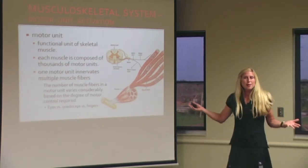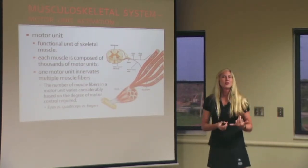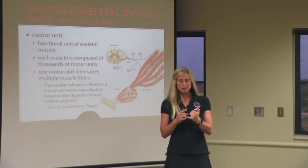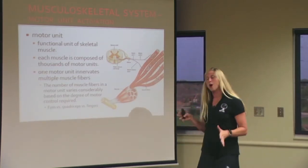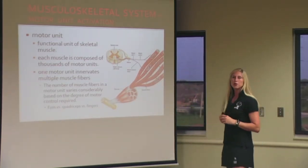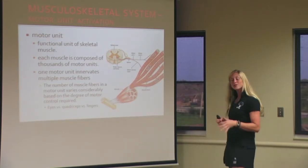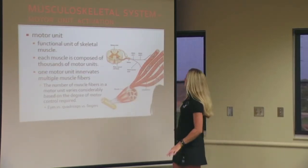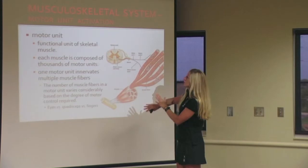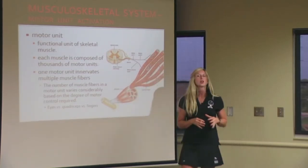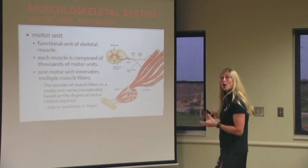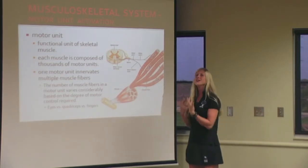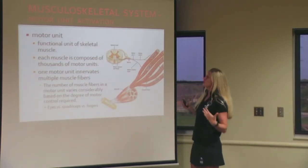Now, how does that muscle actually contract? We talked about the nervous system and how our body is innervated through a maze of nerves that spin off of our brain and spinal cord. Those nerves get signals from the brain, send them out, and off of the nerves are bundles called motor units. The motor unit is the functional unit of a muscle — it makes the muscle contract and relax, receiving impulses to contract and to relax.